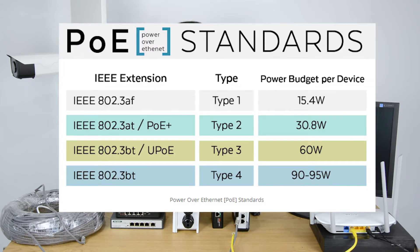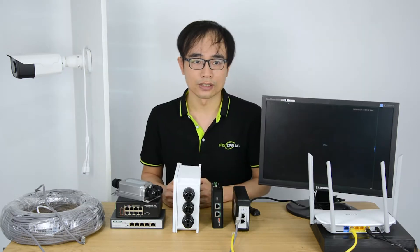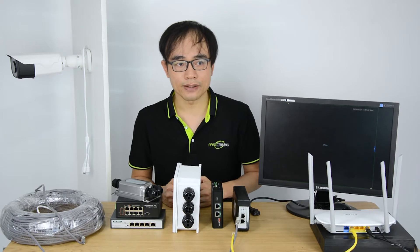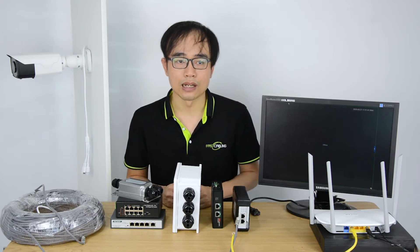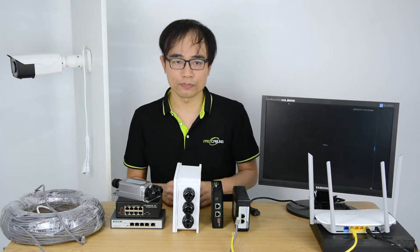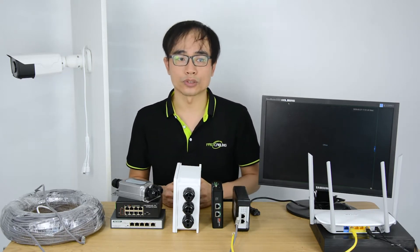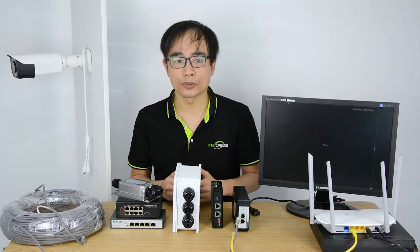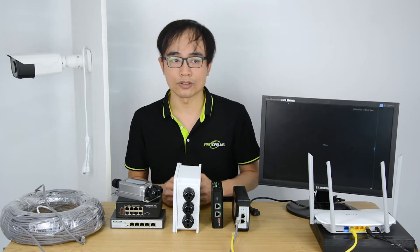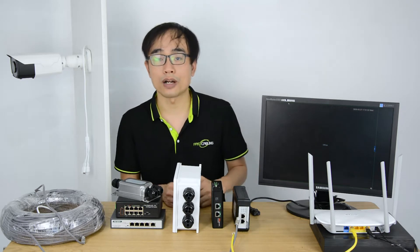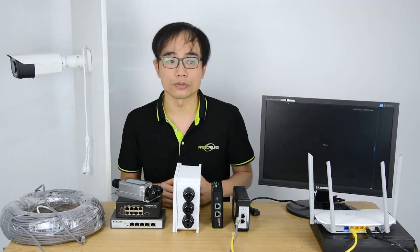The 95W PoE, also named IEEE 802.3bt, delivers around 3 times the power budget over legacy PoE, making more things possible. However, both the PoE switch and IP device should support IEEE 802.3bt in order to work with full power. Otherwise, the power system will only work at 30W.